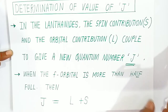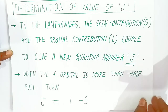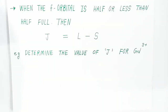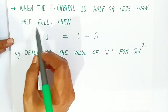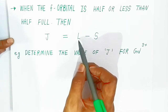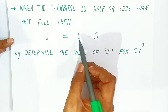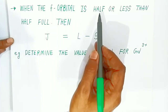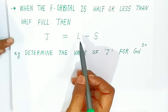The formula for j totally depends on whether the f orbital is fully filled or half filled. When the f orbital is half filled or less than half full, you have to use the formula j = L − S.